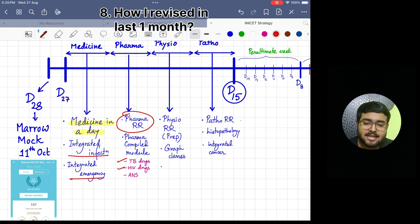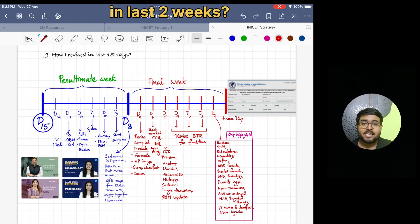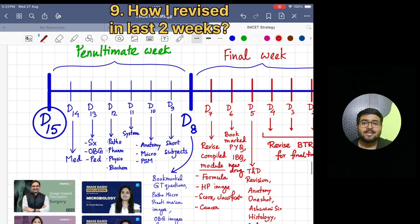Then I gave three days to physiology. I did Physiology RR and Graph Class from BTR Compiled Module. After that, I gave three days to pathology. I did Patho RR and along with that I did Histopathology and Integrated Cancer from BTR Compiled Module. I have marked Day 15 because you should give your last GT on that day before the exam. After that, don't give any GT.